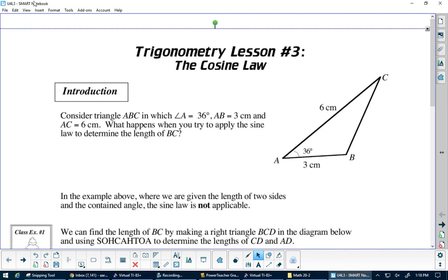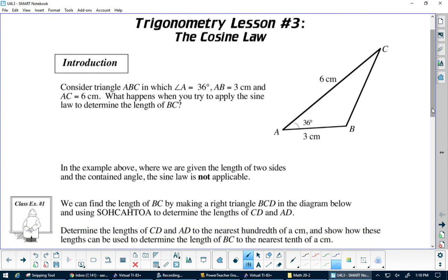Yesterday we did the sine law, today we're going to do the cosine law. We know SOHCAHTOA for right angle triangles, sine law for two loops. What's different about this one? Let's look at this question here. We know it's not a right angle triangle, and sine law won't work.